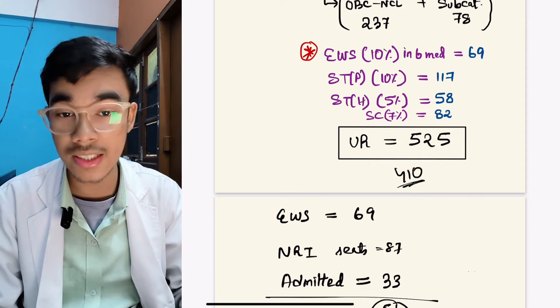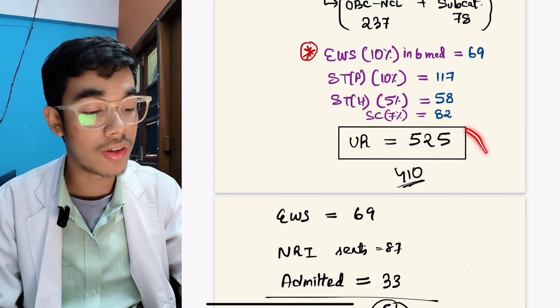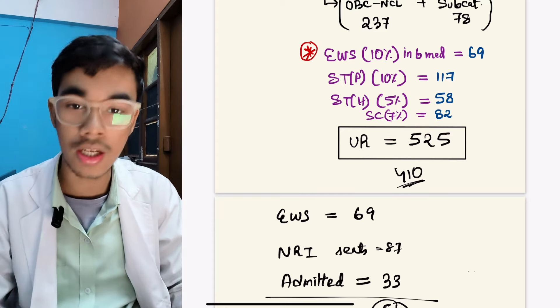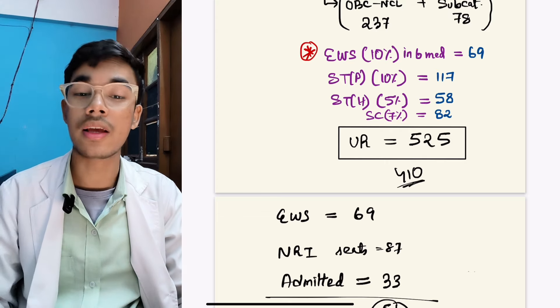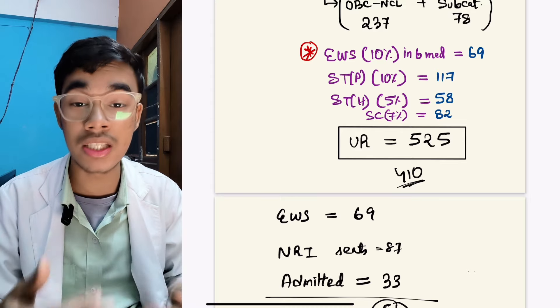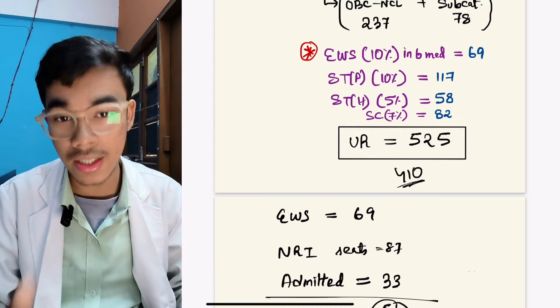In 2022, 410 seats, and in 2023, 525 seats were cut off, which was reduced. There was a difference of 2 marks, but there was also a difference because definitely marks increased, but still, because the seats increased, the cutoff made a difference.